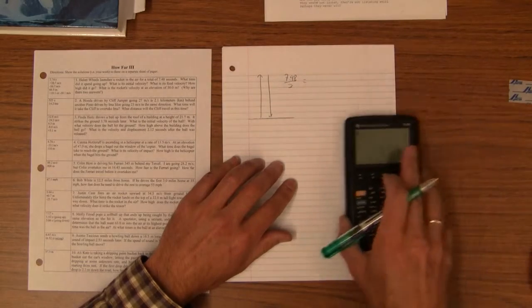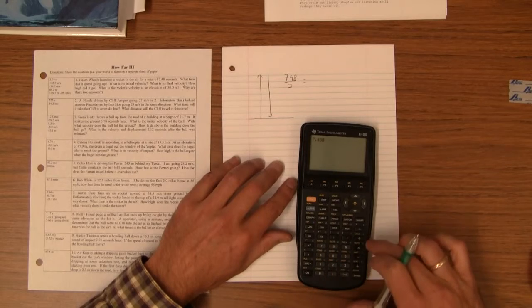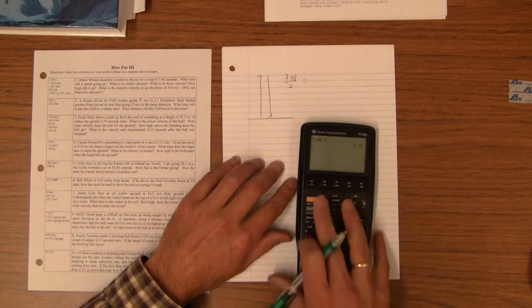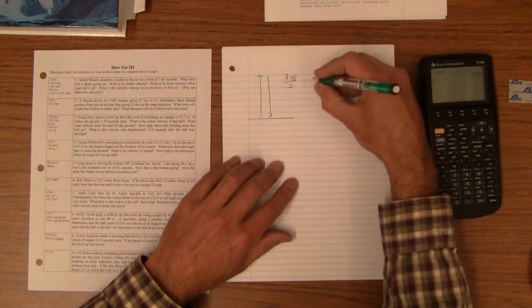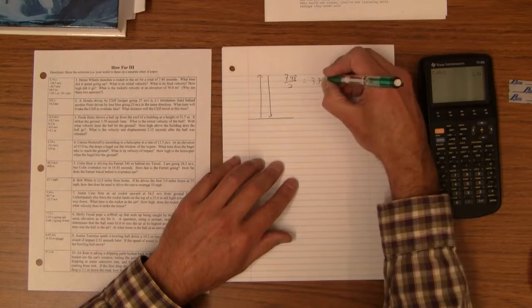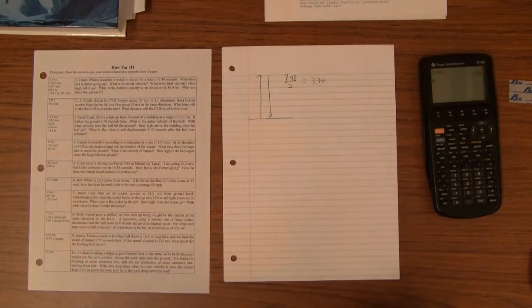The time spent going up is 7.48 divided by 2, 3.74 seconds. That's the first question that it asks.